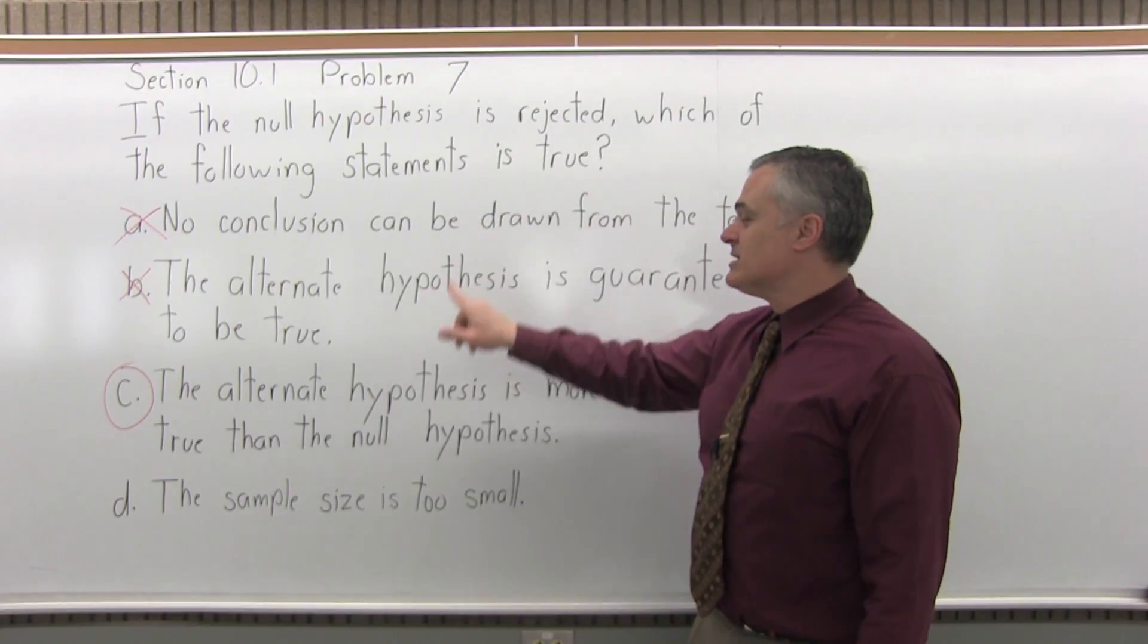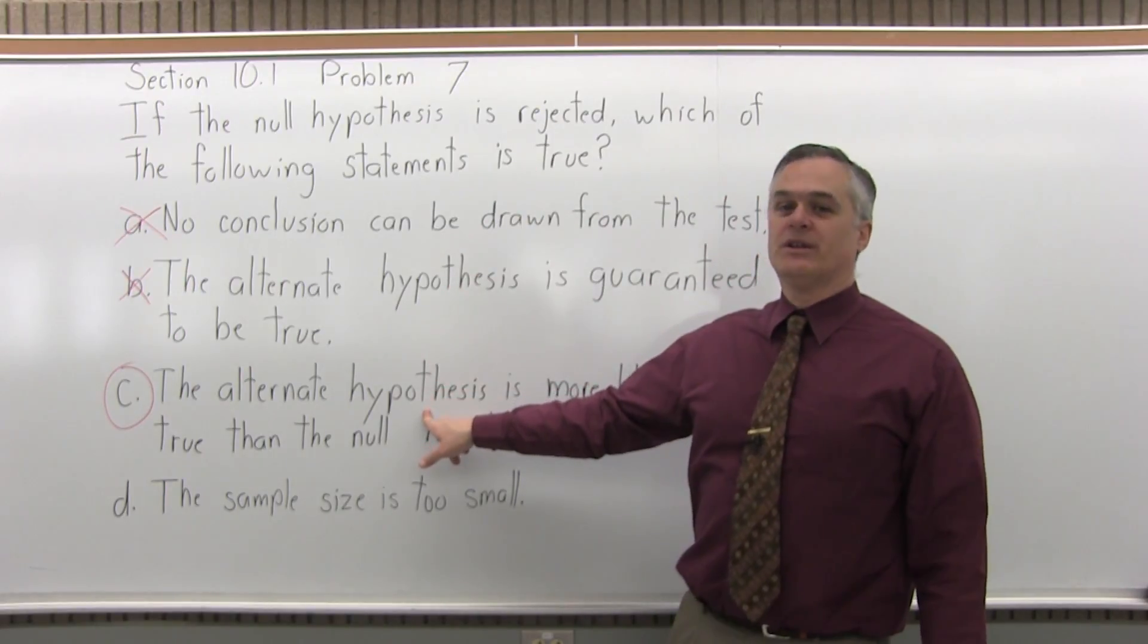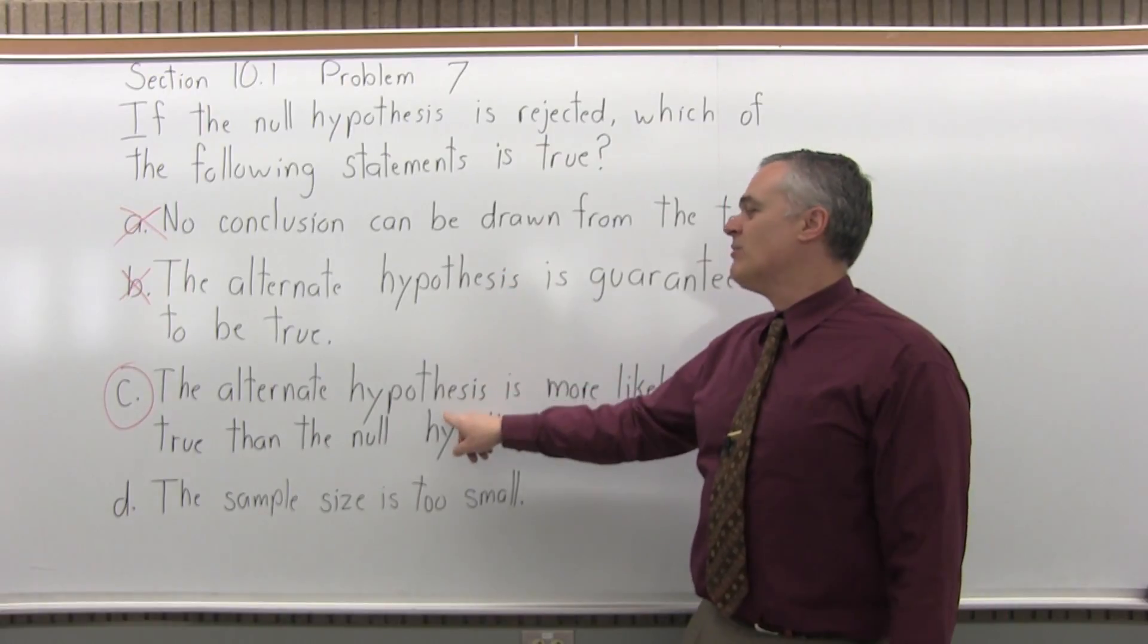So if you reject the null, that means it's more likely that the alternate hypothesis is the one that's true. Not a guarantee, more likely.